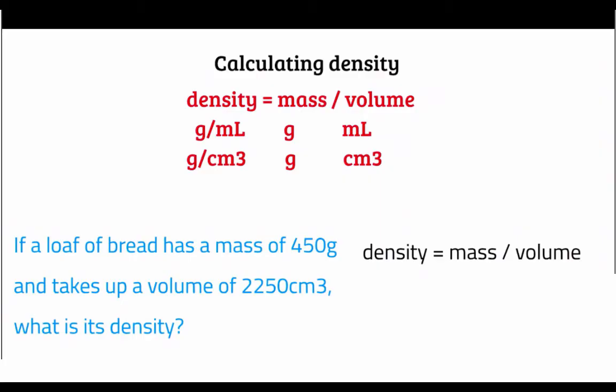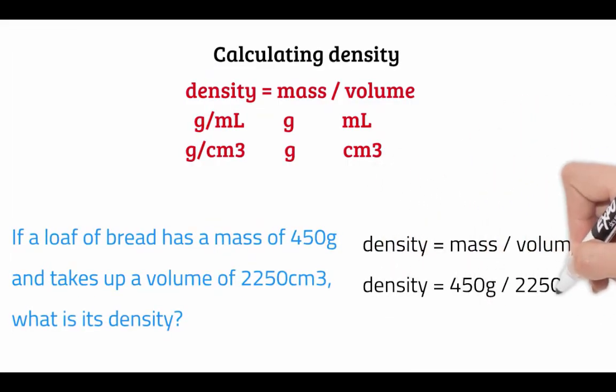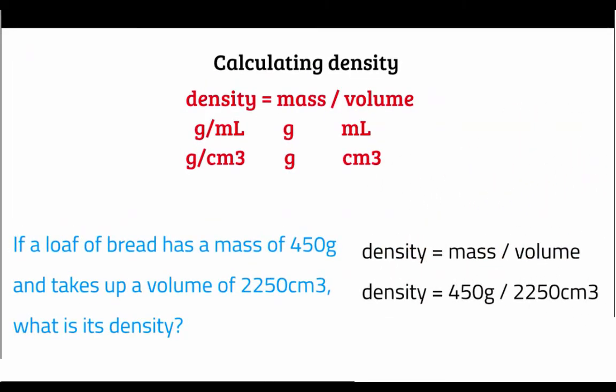The first thing we do is write out our equation, which is density equals mass divided by volume. Then we plug in what we know. The mass is 450 grams, so we write that where we would write mass, and our volume is 2250 centimeters cubed, so we put that in where we would write volume.